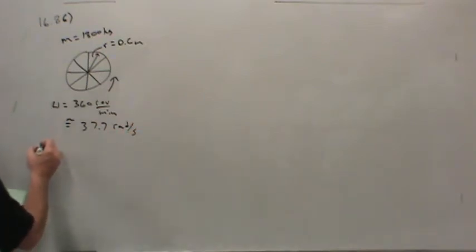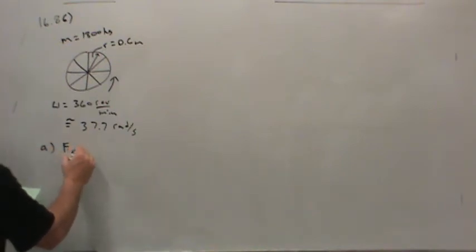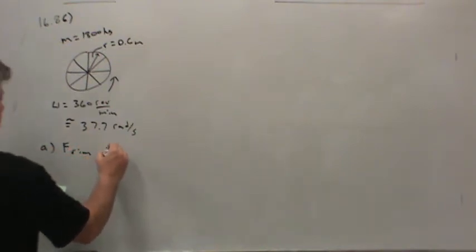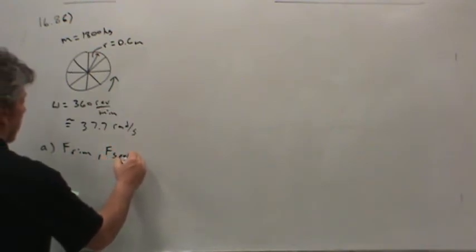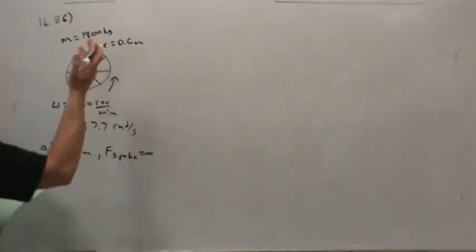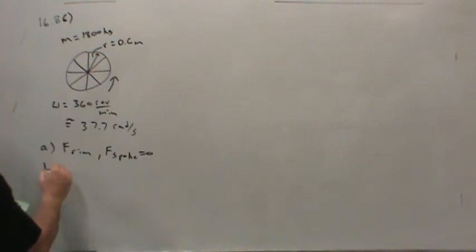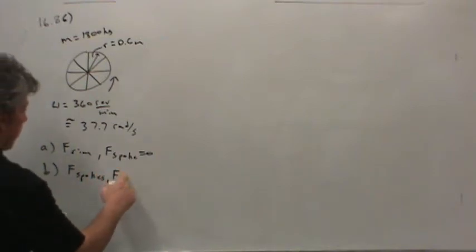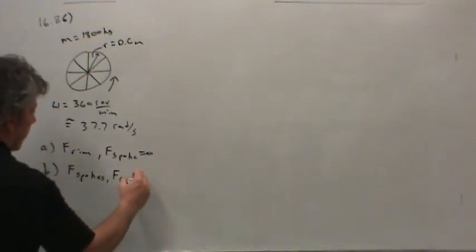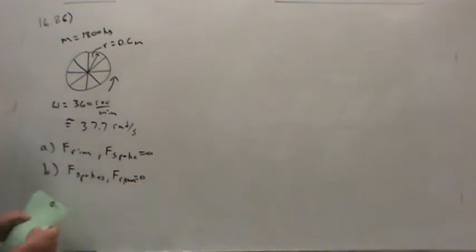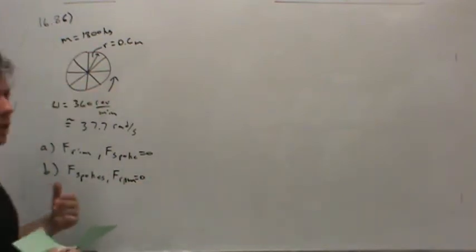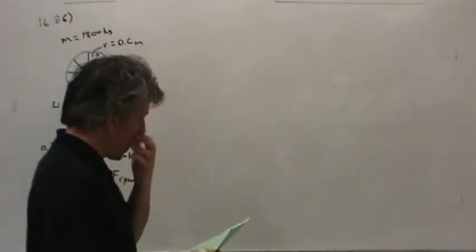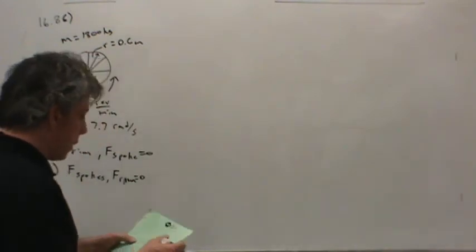And what we're supposed to do is find the force in the rim if the force in the spokes were 0. In other words, what if the spokes just weren't there? And then we're supposed to find the force in the spokes if the force in the rim is 0. That's as if the rim had no strength.